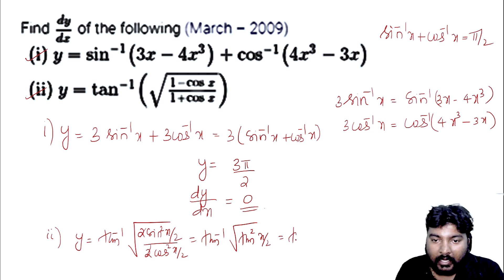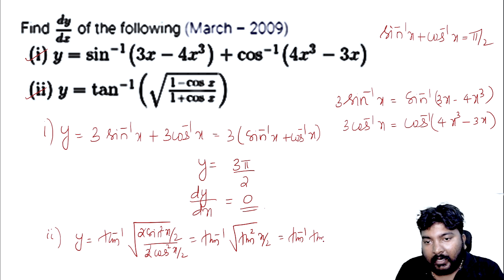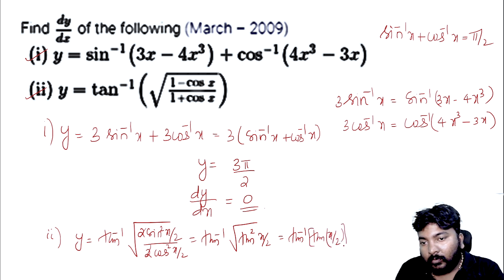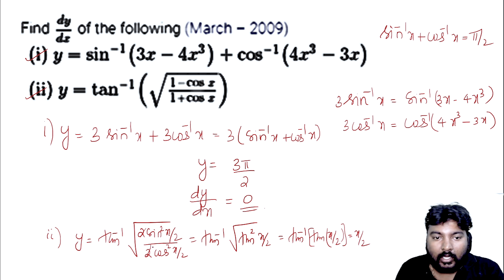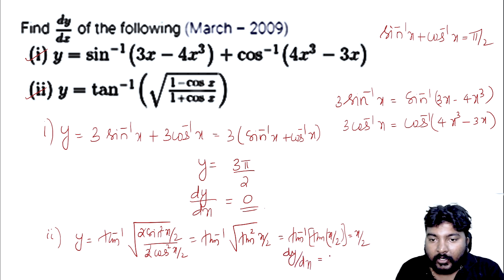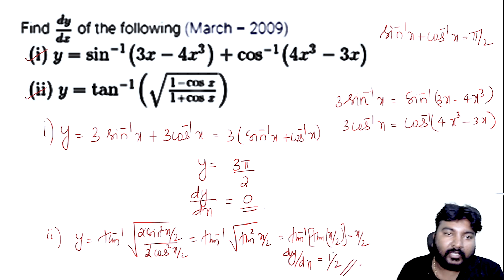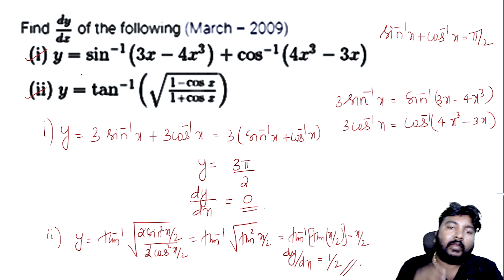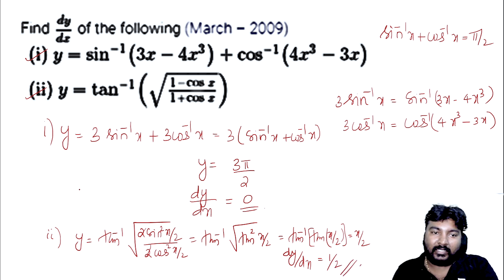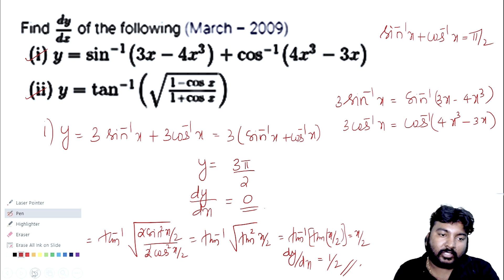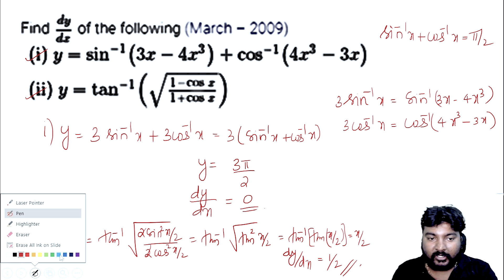The square root and square cancel, giving tan⁻¹(tan(x/2)). The tan⁻¹ and tan cancel, so y equals x by 2. Therefore dy/dx is equal to 1 by 2. Both questions are crystal clear.